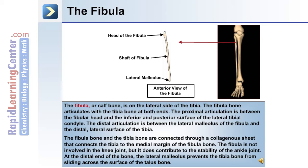The second bone of the lower leg is the fibula, which contains a head, shaft, and a lateral malleolus. The fibula or calf bone is on the lateral side of the tibia and articulates with the tibia at both ends. The proximal articulation is between the fibular head and the inferior and posterior surface of the lateral tibial condyle. The distal articulation is between the lateral malleolus of the fibula and the distal lateral surface of the tibia. The fibula and tibia are connected through a collagenous sheet. The fibula is not involved in the knee joint, but it does contribute to the stability of the ankle joint.